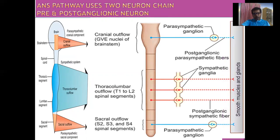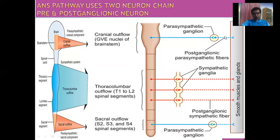The Autonomic Nervous pathway uses a two-neuron chain. The first neuron is called the Preganglionic Neuron and the second is called the Postganglionic Neuron. In the Parasympathetic System, the preganglionic neurons are long, taking origin from the CNS and ending in the parasympathetic autonomic ganglia, which are located close to the target organ. Therefore, in the Parasympathetic System, the preganglionic fibers are long but the postganglionic fibers are short.